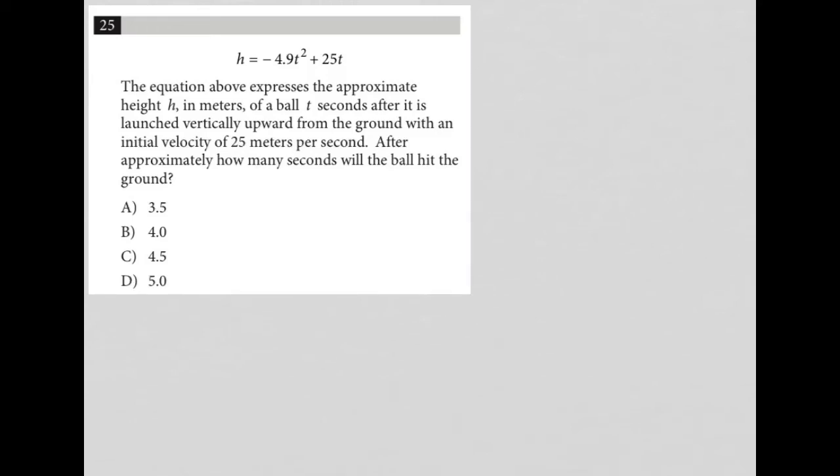So this question is a translate word problem, which really I can tell before reading it just because I know that it's longer than three lines. We also have an equation provided. So anytime an equation is provided in a question, I like to rewrite that equation for myself. So H equals negative 4.9 T squared plus 25 T. And due to the fact that it's a word problem...